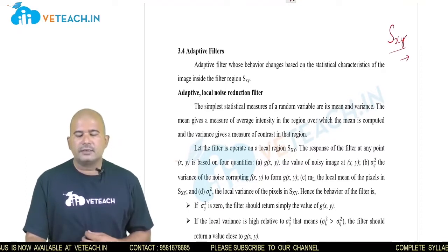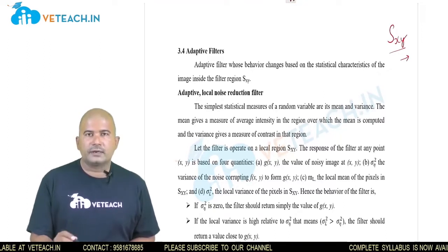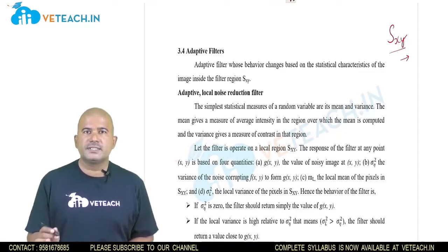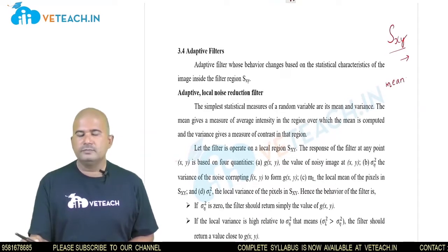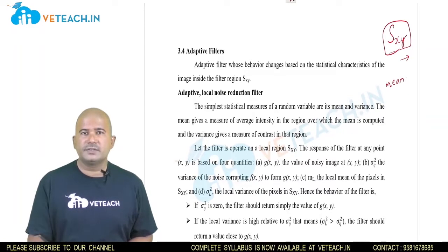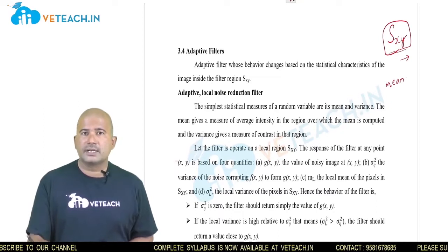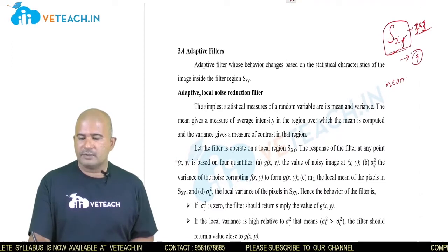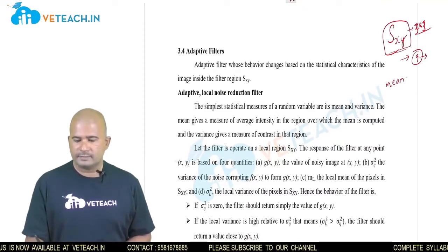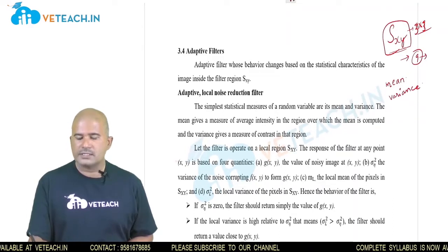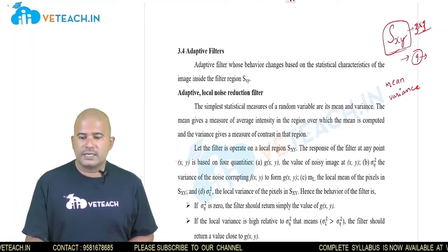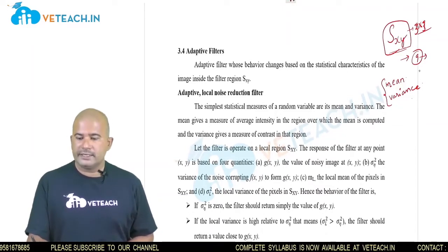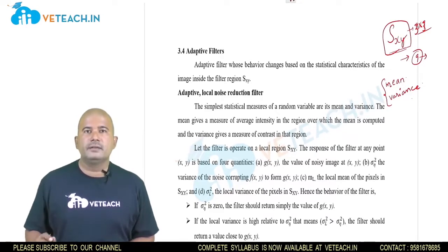In adaptive filters, the statistical characteristics of the image inside the filter region are used. The value of the adaptive filter changes according to the intensity values or spatial characteristics — mainly the mean value. The intensity values in the region s(x,y) are considered as random variables, and their mean and variance are the statistical properties considered. The adaptive filter's output for the center pixel depends upon the variation in these statistical properties — mean and variance of the intensity values in region s(x,y). That is the main difference with the adaptive filter.